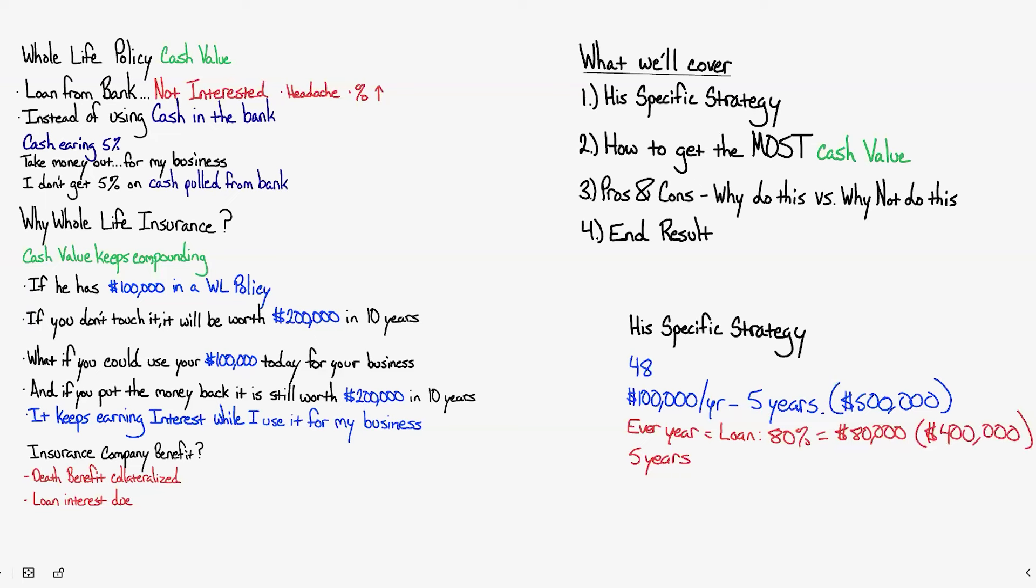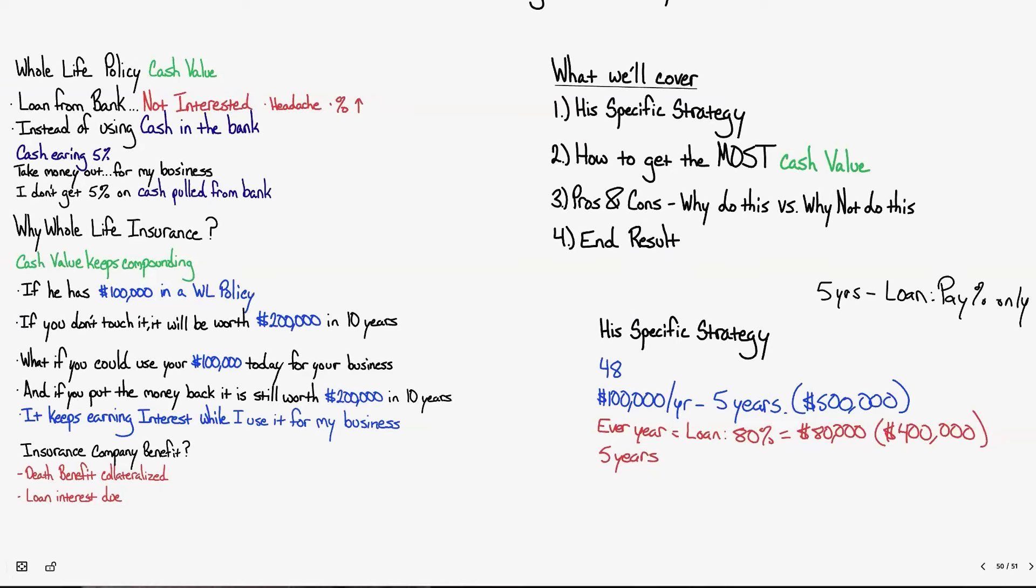Now, what he plans on doing during this five-year period regarding the loan: he won't pay any of the principal, he'll pay interest only. And the reason why is because he's still paying this $100,000.